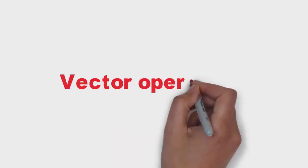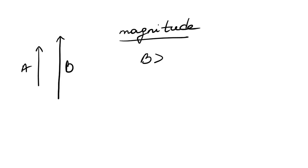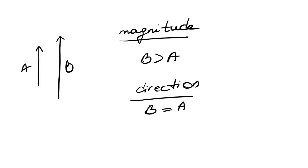In vectors, the arrow shows the direction and the length of the arrow shows the magnitude of a vector. Here we see that the magnitude of b is larger than a because of their length, and their directions are the same.